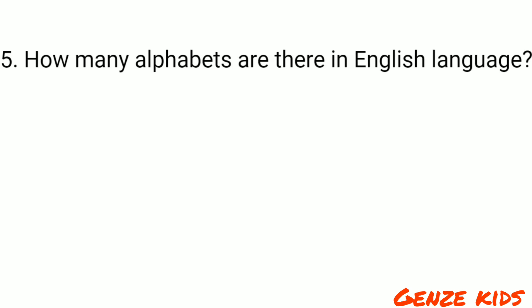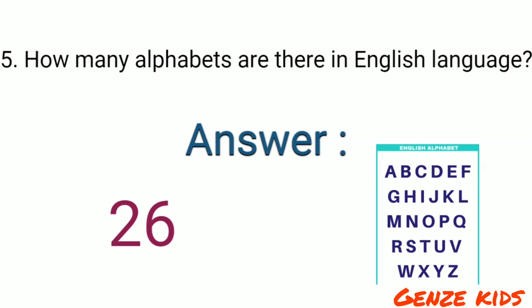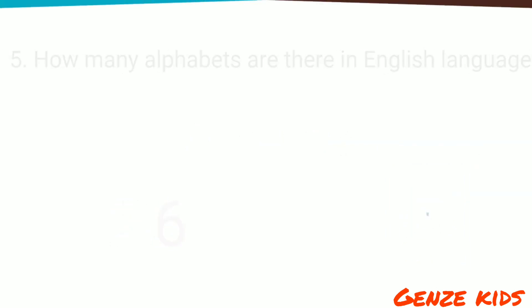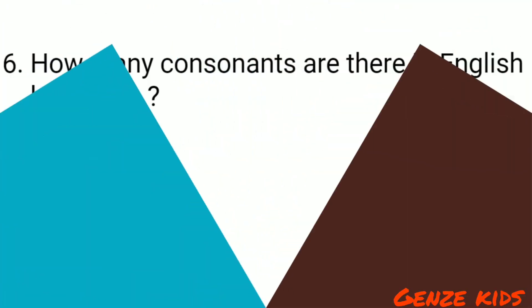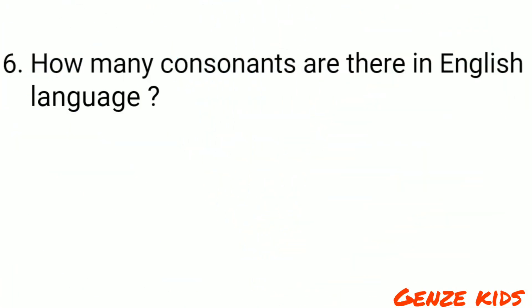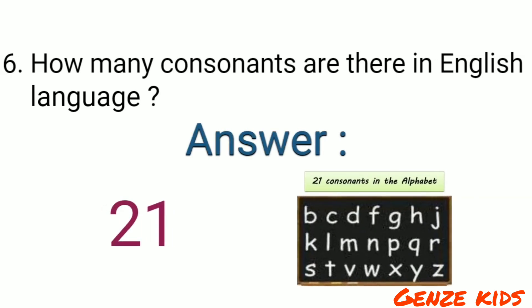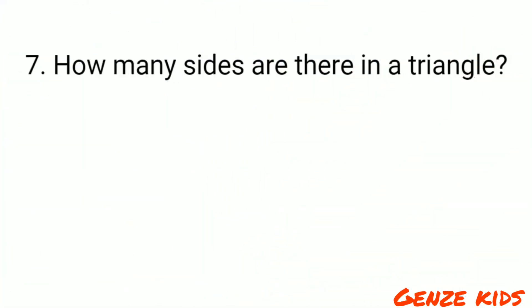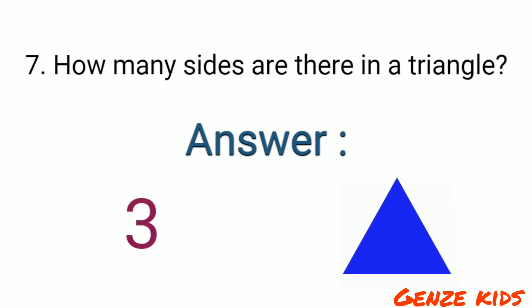How many alphabets are there in the English language? 26 alphabets. How many consonants are there in the English language? 21 consonants. How many sides are there in a triangle? Three sides.